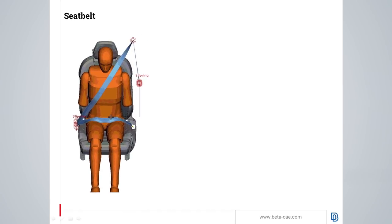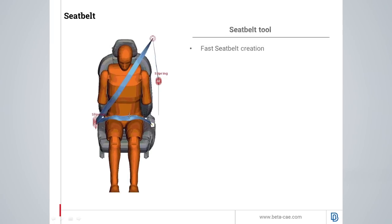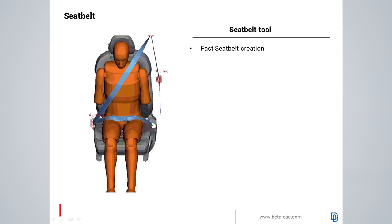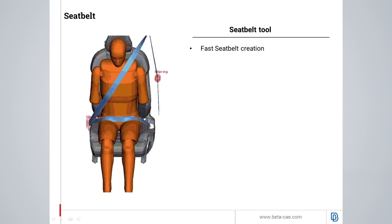Regarding dummy restraining, the seatbelt tool in ANZA offers the ability to have fast creation of the seatbelt, an easy definition of its geometrical and solver parameters, and a real-time change of the shape of the belt by dragging and dropping it to achieve the desired shape and ensuring that no penetration occurs between the dummy and seatbelt, as the video now demonstrates on the left side of the screen.